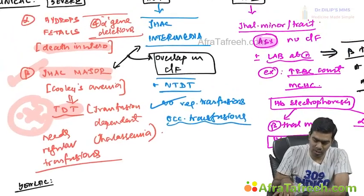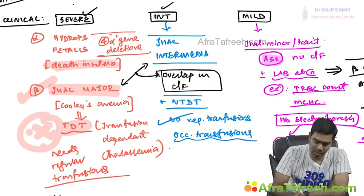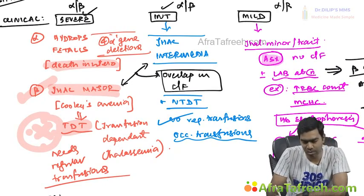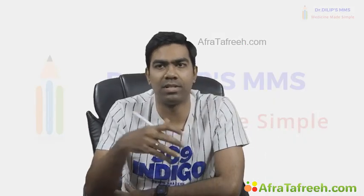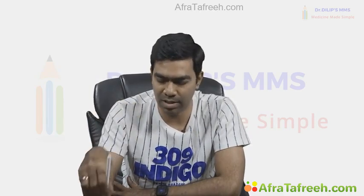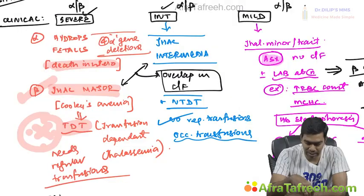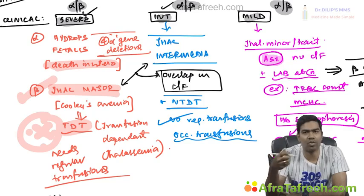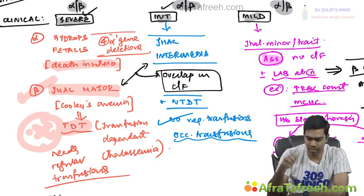It is not that severe forms only come from beta and mild forms only from alpha. Any type can produce any clinical picture. The clinical presentation will only tell you the severity — whether it is severe, mild, or intermediate. Whether the underlying problem is alpha or beta can only be diagnosed based on laboratory parameters.